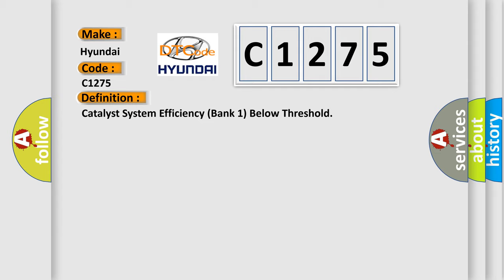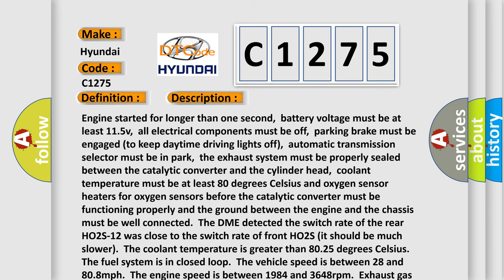The basic definition is catalyst system efficiency bank one below threshold. And now this is a short description of this DTC code.